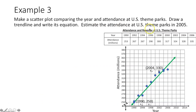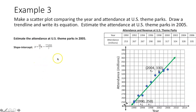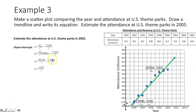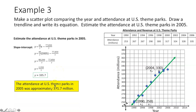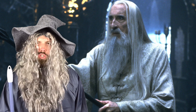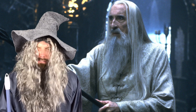Now estimate the attendance at U.S. theme parks in 2005. Take the equation of the trend line and plug in 2005 for x, since years are on the x-axis. Simplify: 2005 over 1 times 40/7, subtract the fraction, and dividing in a calculator gives approximately 335.7. Since attendance is in millions of people, in the year 2005 there were approximately 335.7 million people who attended U.S. theme parks. Who did Saruman get engaged to? Saru-woman!